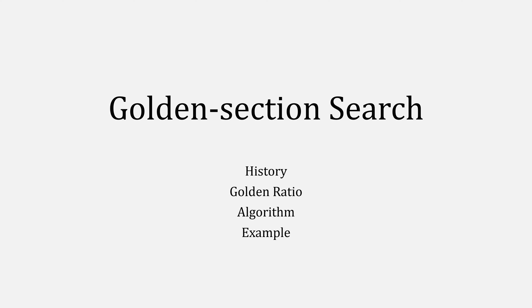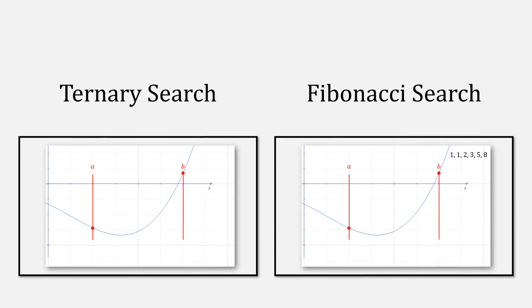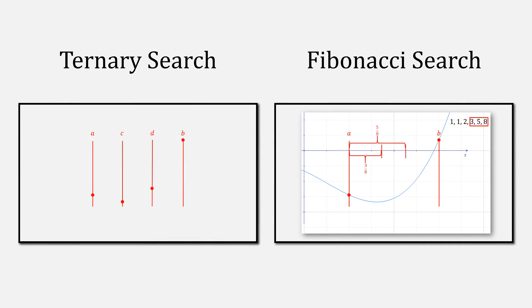I'll go over the history and derivation of the golden ratio before showing the algorithm and an example. For scaffolding, it's recommended that you have some familiarity with ternary search, and optionally, check out my video on Fibonacci search.